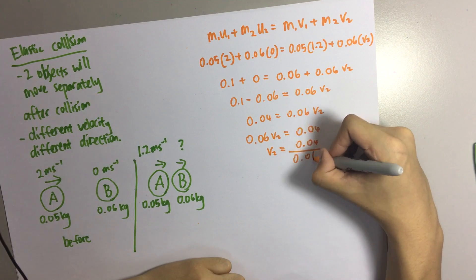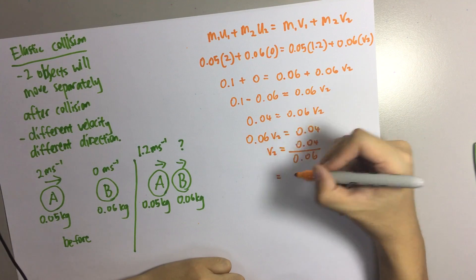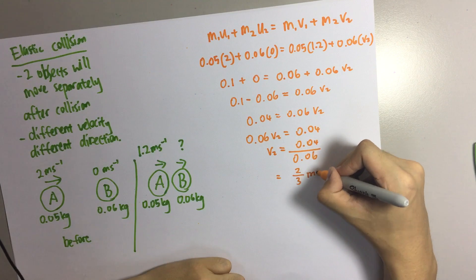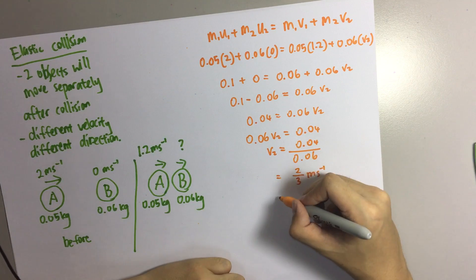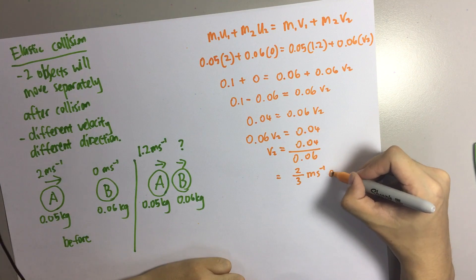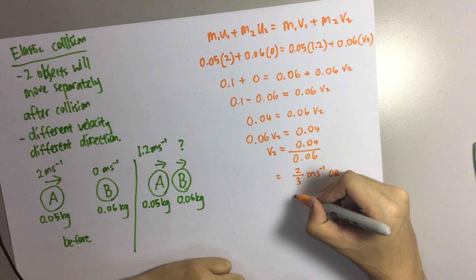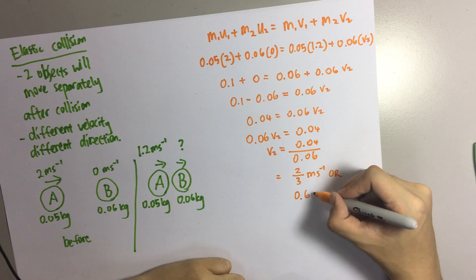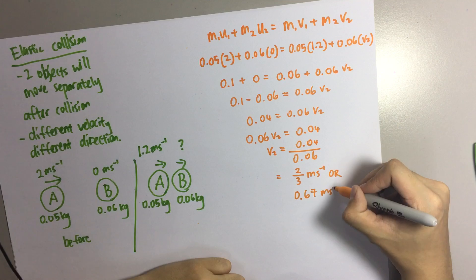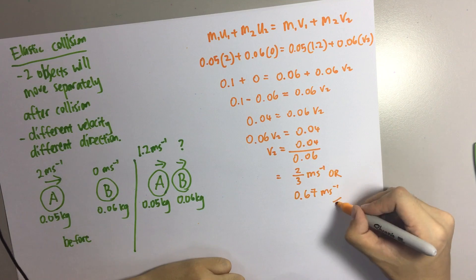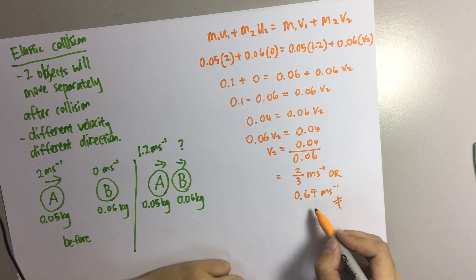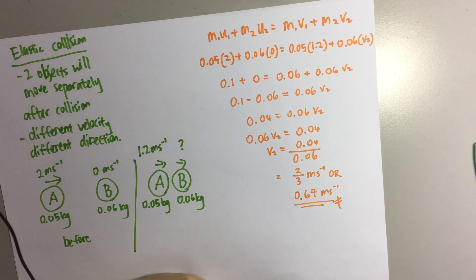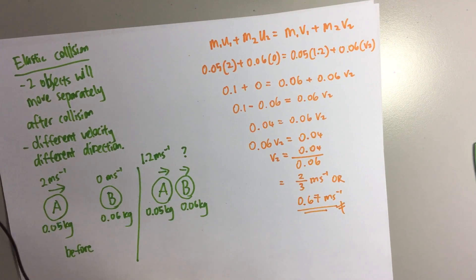So 0.06·V2 = 0.04, therefore V2 = 0.04 divided by 0.06, which gives 2/3 meters per second, or approximately 0.67 meters per second. This will be the speed of object B after collision.